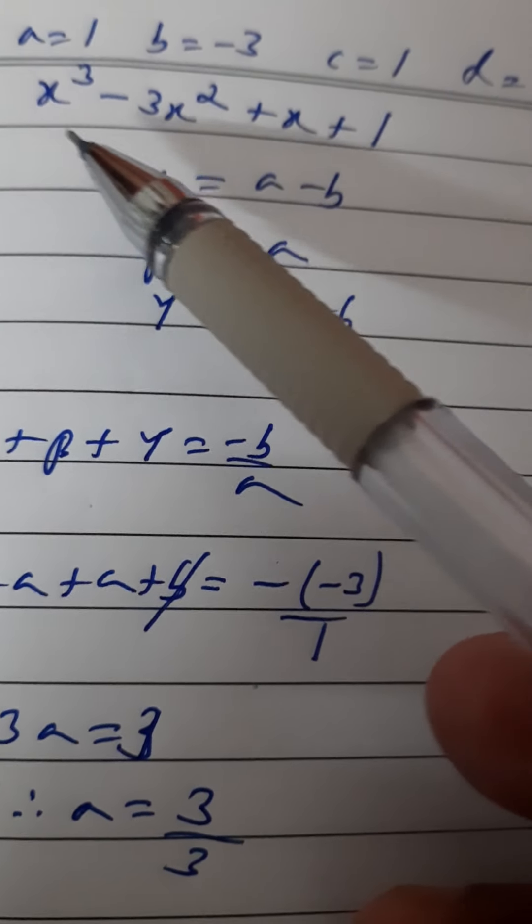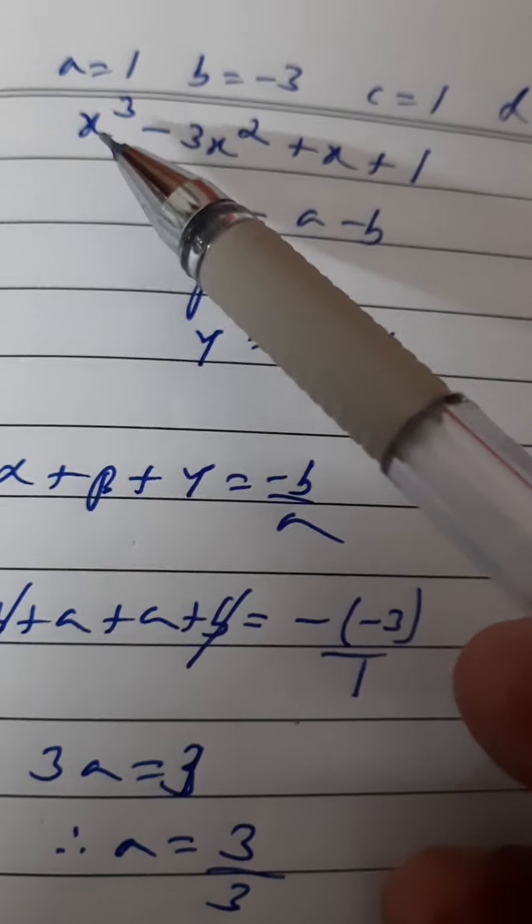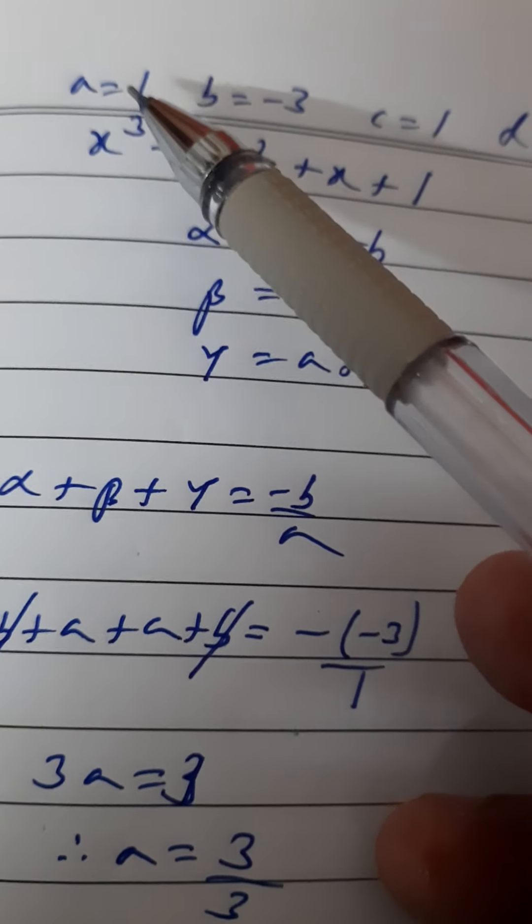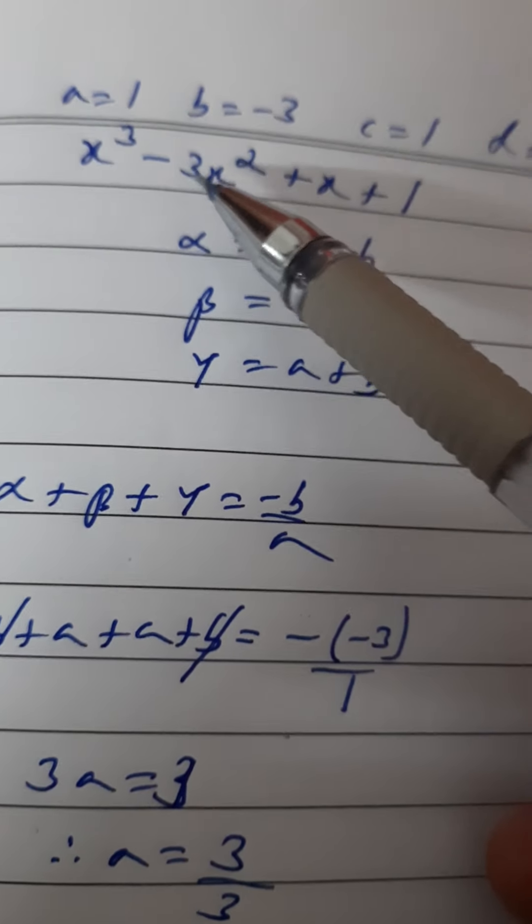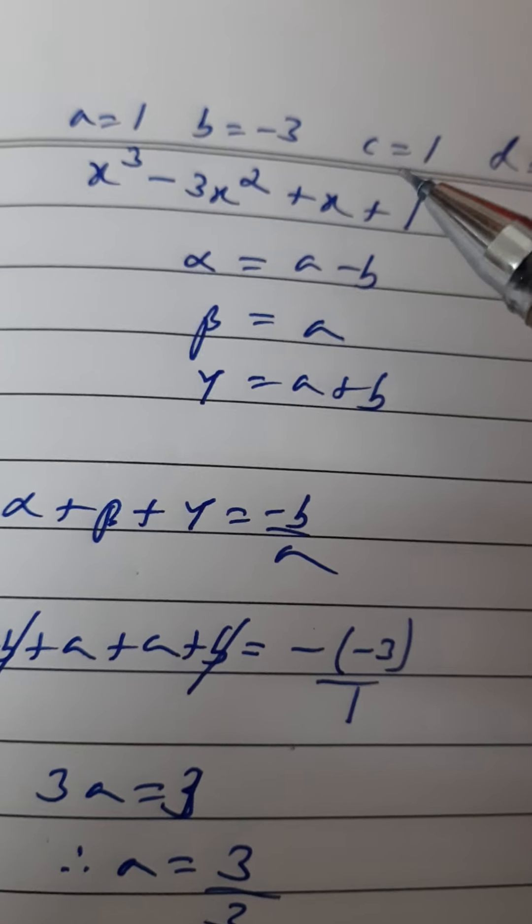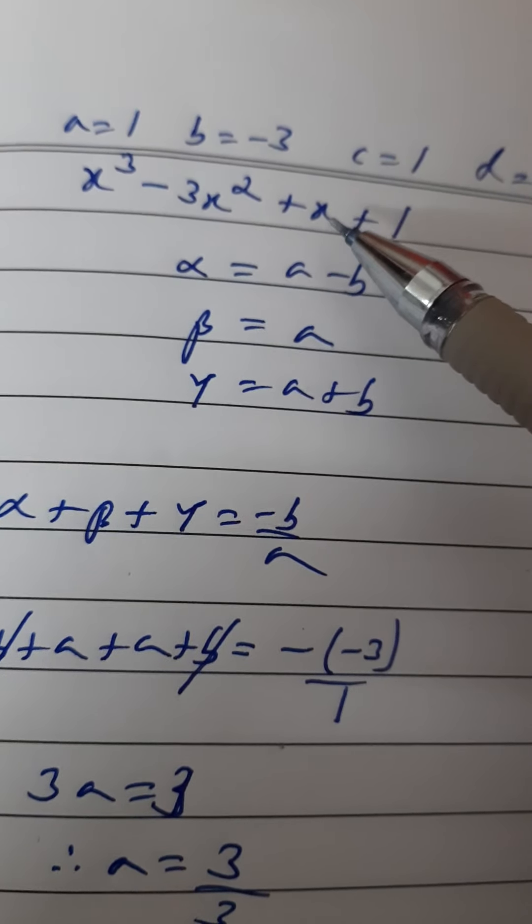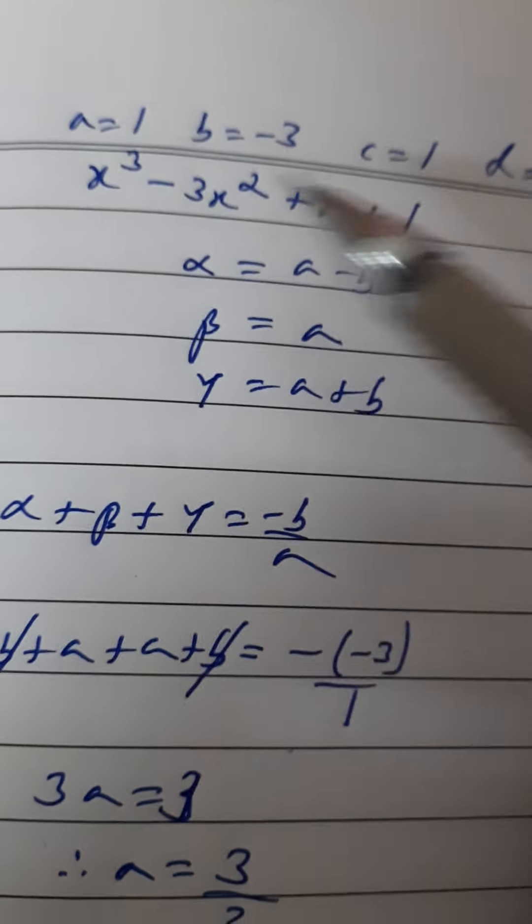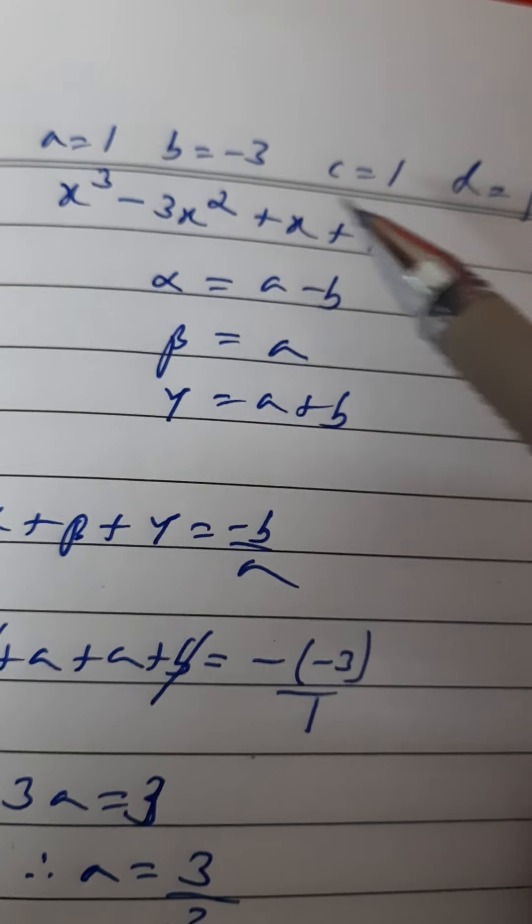Now, as I told you, the coefficient of x³ is a, so a will become 1. The coefficient of x² is b, so b is -3. The coefficient of x is c, that is 1, and d is 1. So hope you understood how to take a, b, c, d.